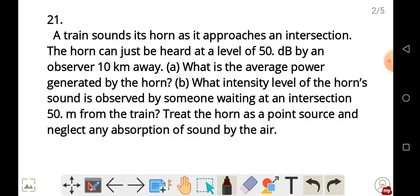A train sounds its horn as it approaches an intersection. The horn can just be heard at a level of 50.0 decibels by an observer 10 kilometers away. Part A, what is the average power generated by the horn? Part B, what is the intensity level of the horn's sound as observed by someone waiting at an intersection 50.0 meters from the train?